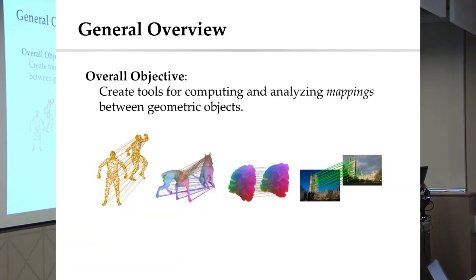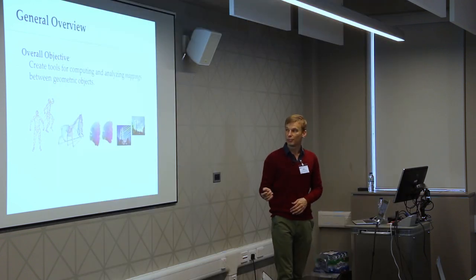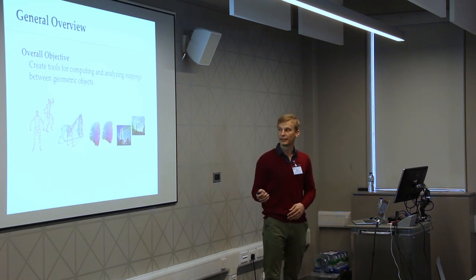The overall objective of the area I'll be talking about is to create tools for finding correspondences between shapes. The overall goal is to create tools that would be somehow generic, so they wouldn't necessarily depend on the exact representation of the shapes — whether you have a point cloud, triangle meshes, volumetric data or images — and the goal is to somehow find similarities or specific correspondences between them.